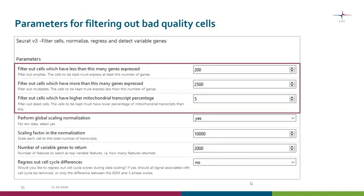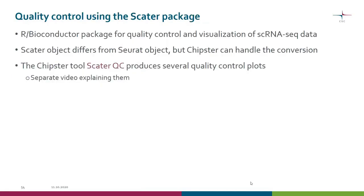Both tools shown so far are based on the Seurat package. There is also another package called SCATER, which is very good for quality control. SCATER is a Bioconductor package with very rich functionality for quality control and visualization of single-cell RNA-seq data. SCATER has its own object structure, different from the Seurat object, but in Chipster you can give a SCATER object to SCATER tools because Chipster handles the conversion behind the scenes. There is a SCATER QC tool in Chipster that produces many different quality plots, and there is a separate video explaining how to interpret them.